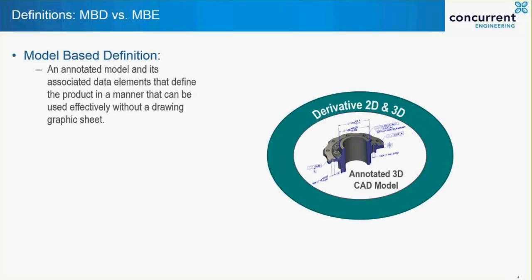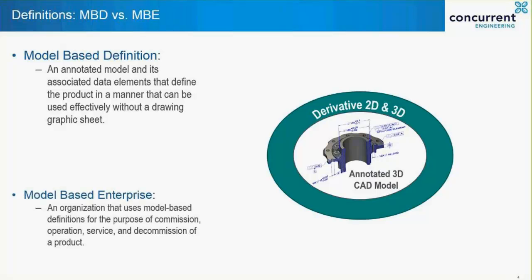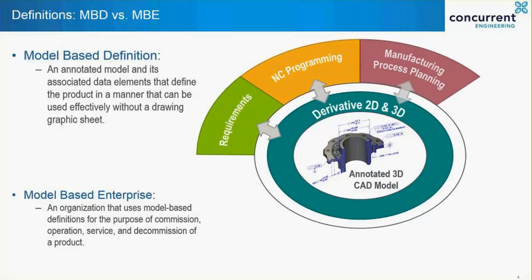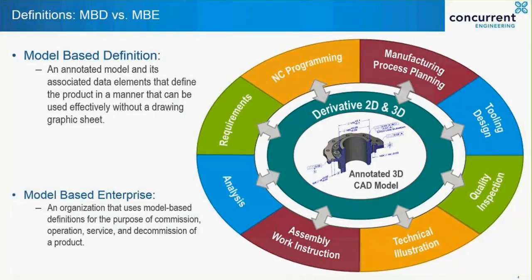Model-based engineering falls into two categories. Model-based definition, or MBD, involves replacing the traditional 2D drawing with a fully annotated 3D model that contains all the information required to manufacture or assemble your components or product. Model-based enterprise, or MBE, is where the MBD model is then shared in a controlled way downstream with other stakeholders. With an MBE approach, the rich information contained in the 3D model can be utilised by manufacturing, quality and a host of other downstream departments.